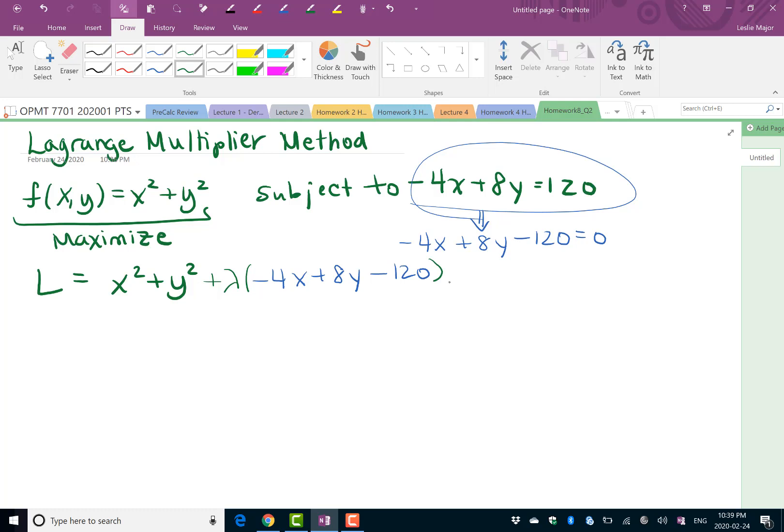We proceed to take the derivatives with respect to all of the variables. Note that lambda is called a dummy variable. The Lagrange method is pretty amazing in that we're actually going to find the maximum value for our function and satisfy this constraint at the same time. By putting it in, when we take the derivative with respect to lambda, we actually end up getting our equation for our constraint back.